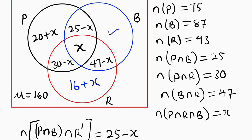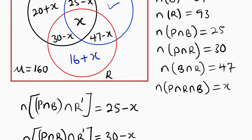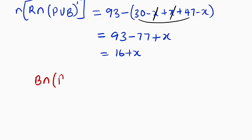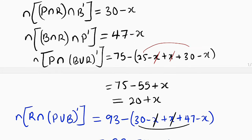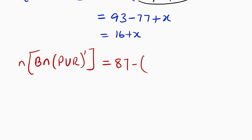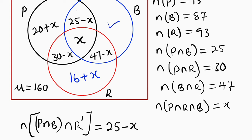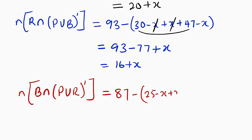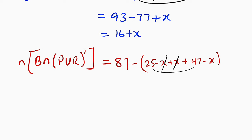Finally, B only: B intersection (P union R) complement. The number of students with books is 87. We take away 25 minus X, plus X, plus 47 minus X. X cancels X, 25 plus 47 is 72, so we have 87 minus 72 plus X, which equals 15 plus X.